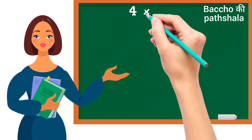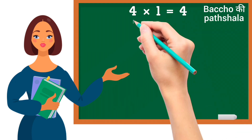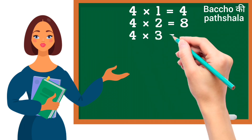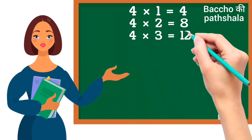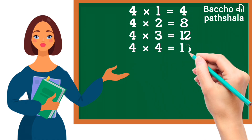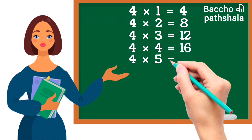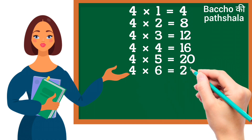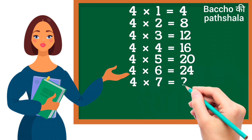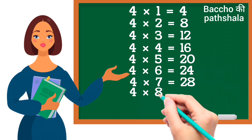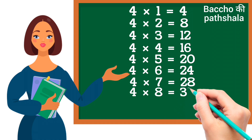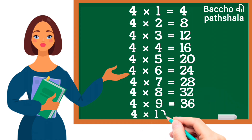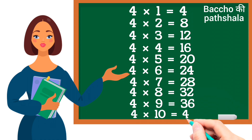Four ones are four. Four twos are eight. Four threes are twelve. Four fours are sixteen. Four fives are twenty. Four sixes are twenty-four. Four sevens are twenty-eight. Four eights are thirty-two. Four nines are thirty-six. Four tens are forty.